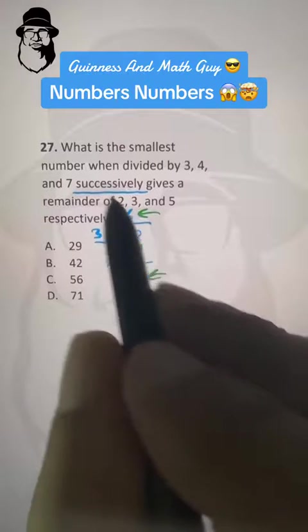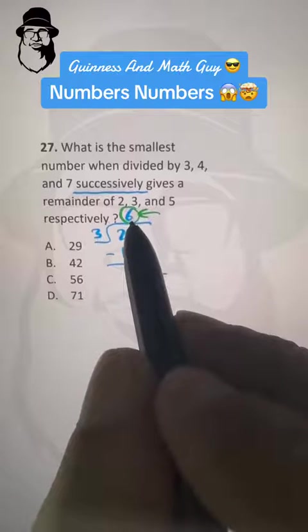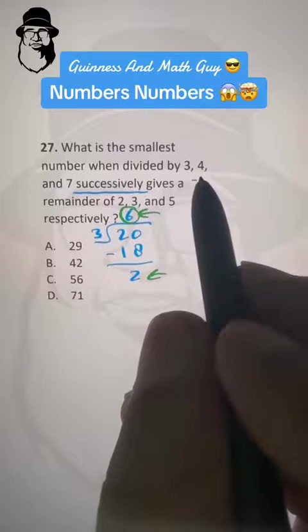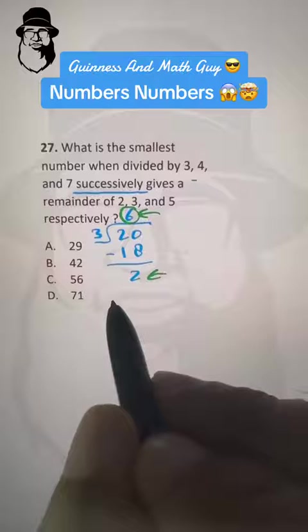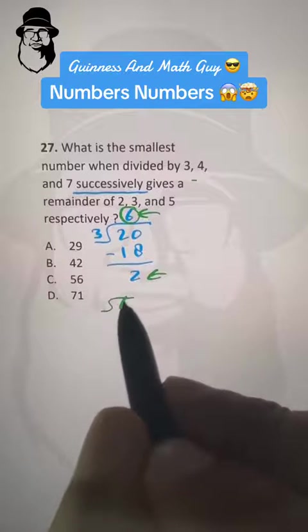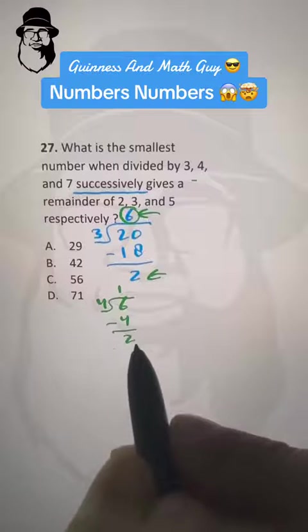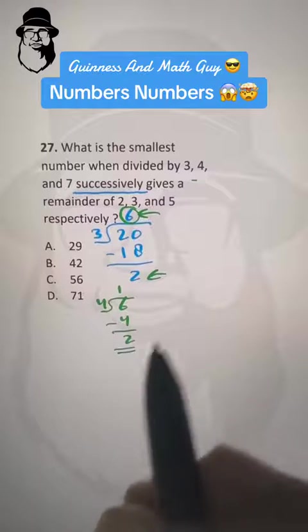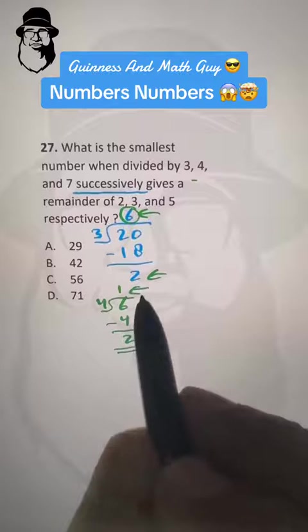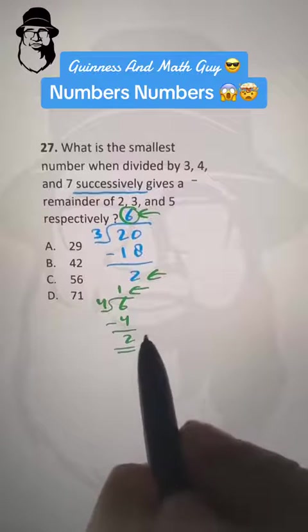Then successively means this same answer 6, we divide it by 4. So 6 divided by 4 gives us 4 times 1 is 4 and we have remainder 2. Now here the answer is 1 and the remainder is 2.